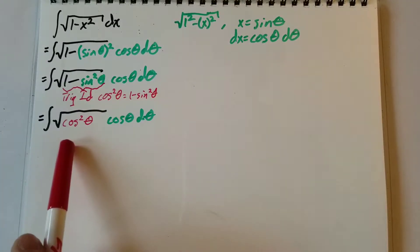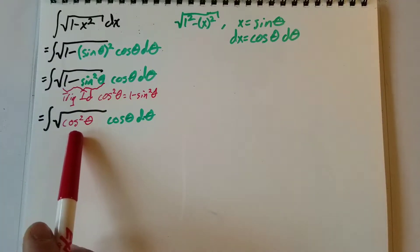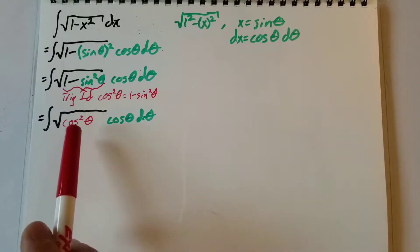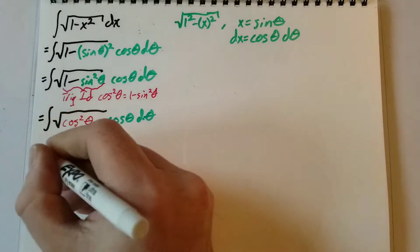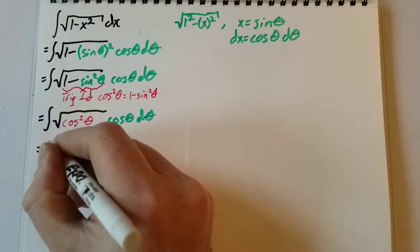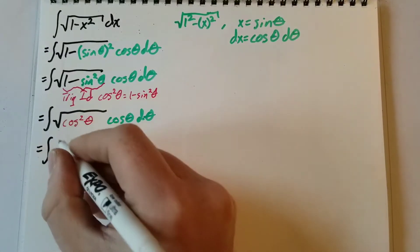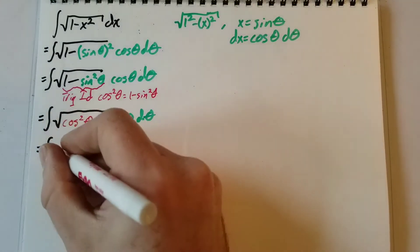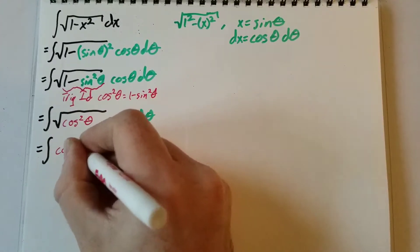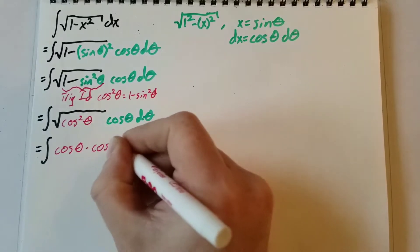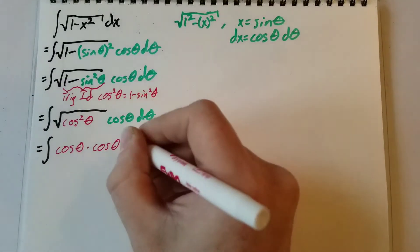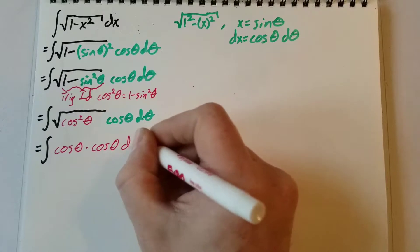Looking at the square root, we see that inside we have cosine squared, so we can get rid of the square root. We now have the integral of cosine theta times cosine theta d theta.